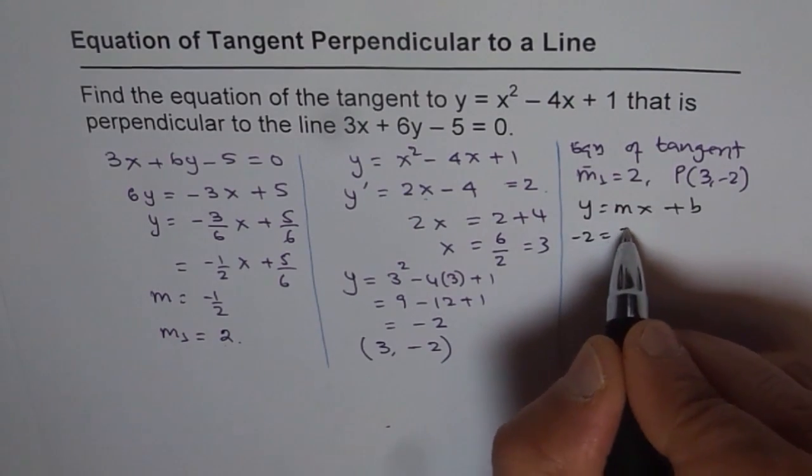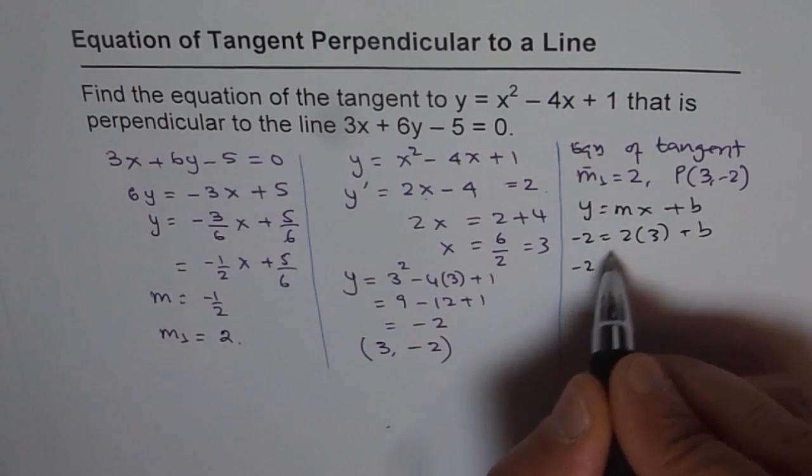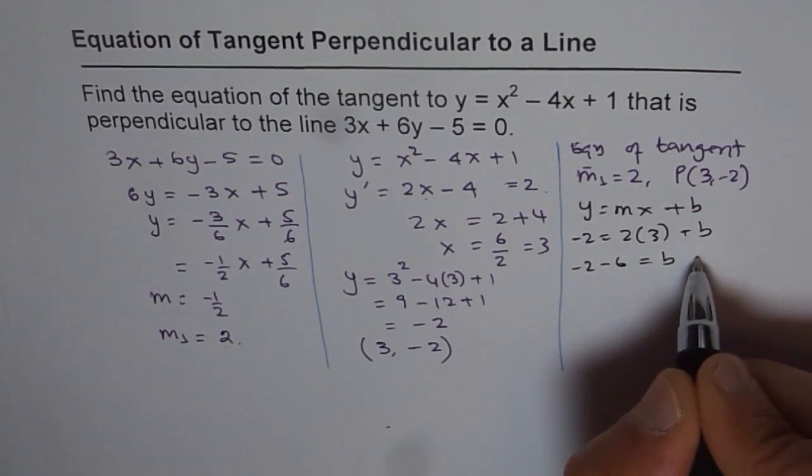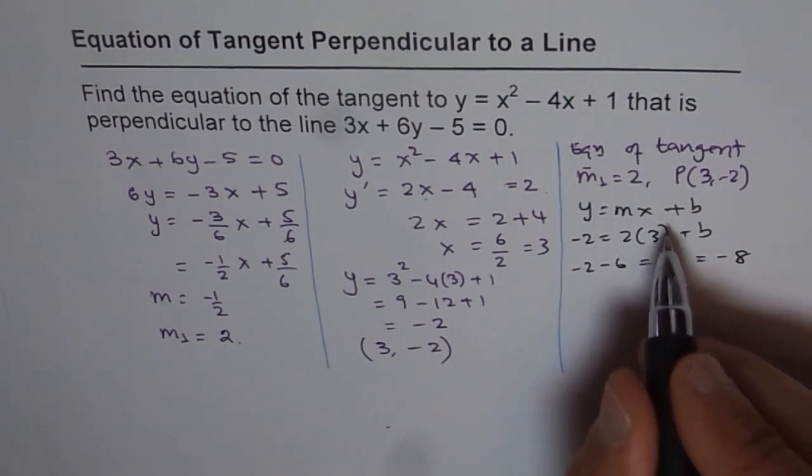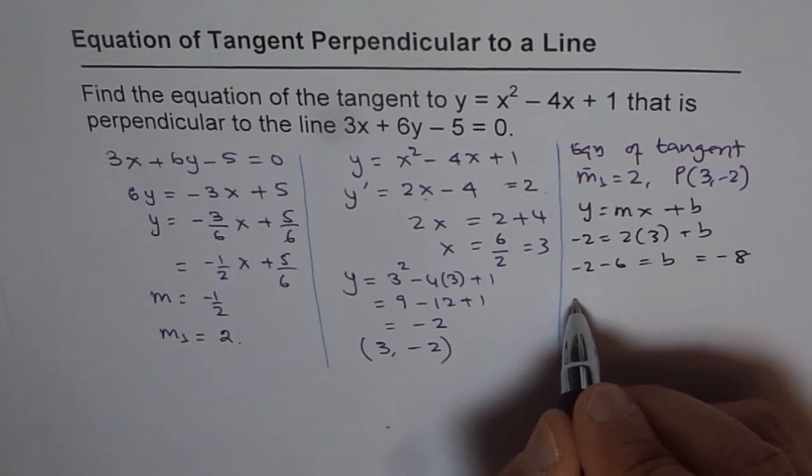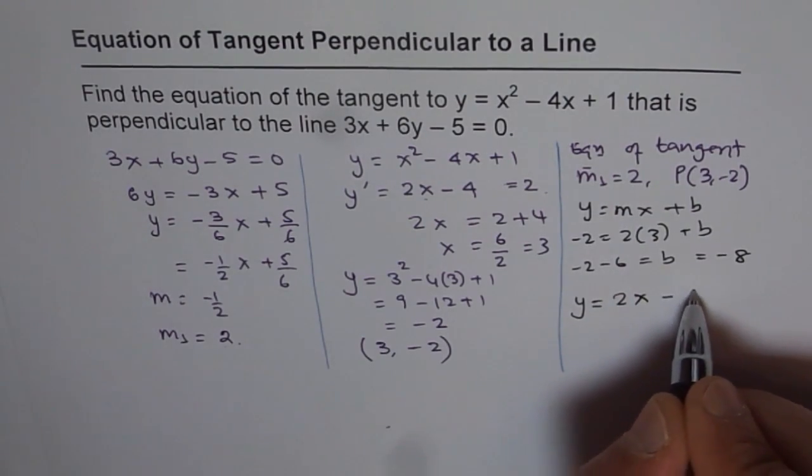slope is 2, x value is 3, we can find b from here. So which is -2 - 6 = b, which is -8. So we know b, so we can write down now the equation of our line. So the equation of the tangent line is y = 2x - 8.